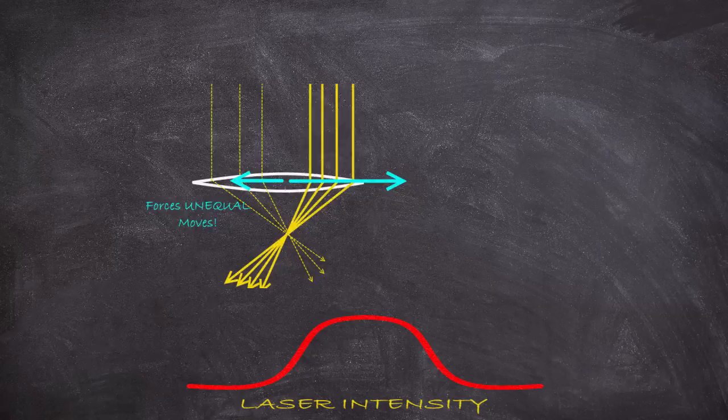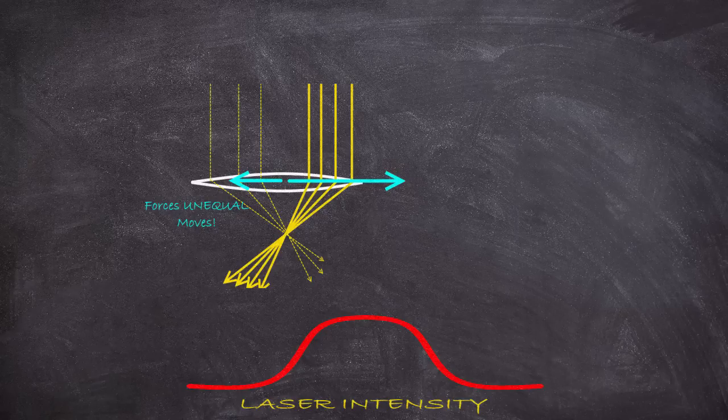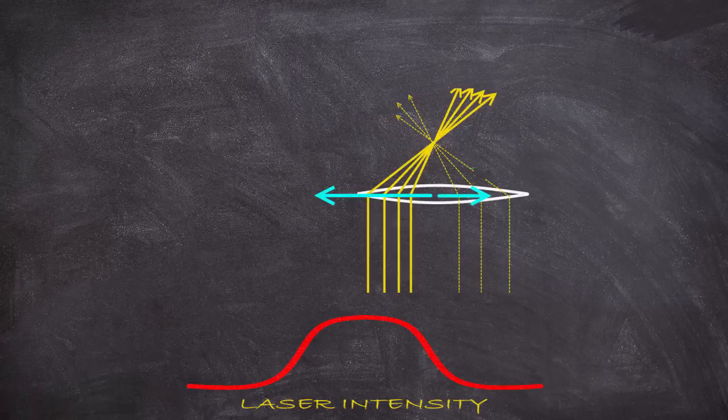But what happens if the lens then leaves the center. It is now unevenly illuminated, but as we see, this uneven illumination always acts to push it back into the beam. The lens is stuck. If it's in the center of the beam, it's fine, but if it moves out of the center, it gets pushed back in. It's held in place by light.